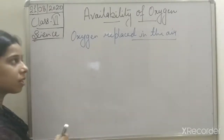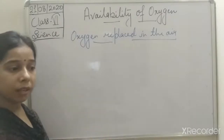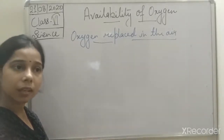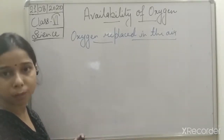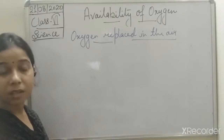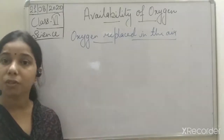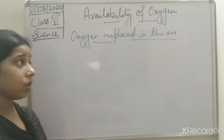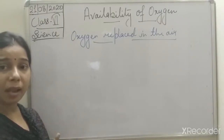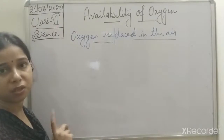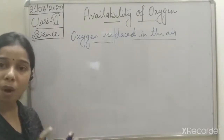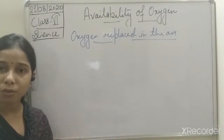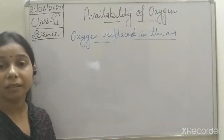Oxygen is present in the atmosphere, and we living organisms — including animals, human beings, and plants — are continuously consuming oxygen from the atmosphere. Then what will happen? The percentage of oxygen will keep on decreasing because we are continuously consuming it. But there is something which helps in replacing the oxygen in the air, and that is the process of photosynthesis, which is carried out by green plants.